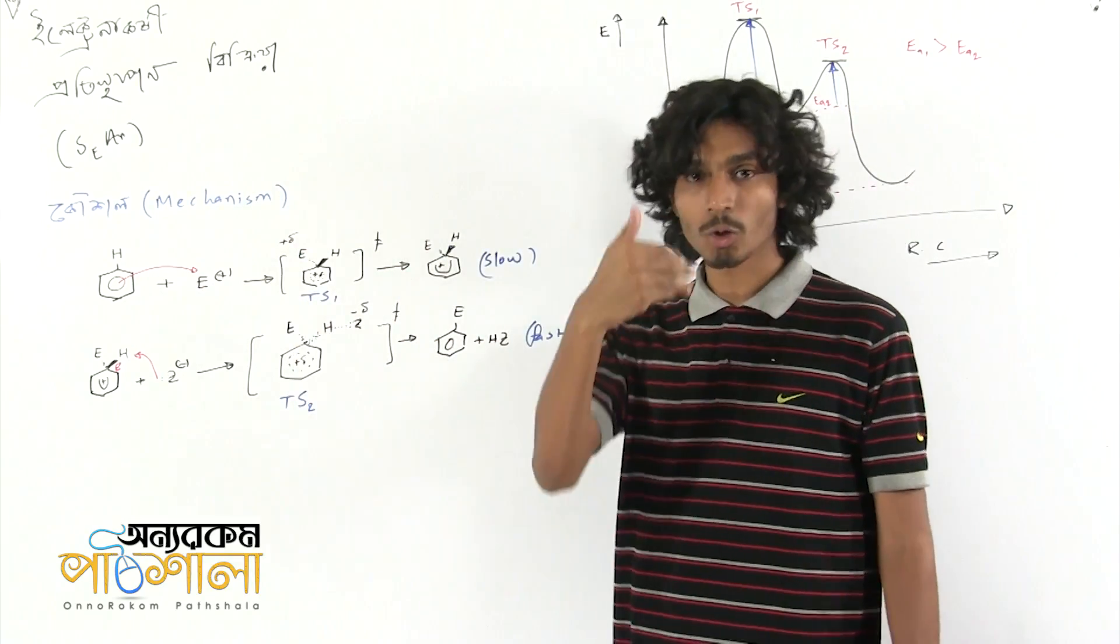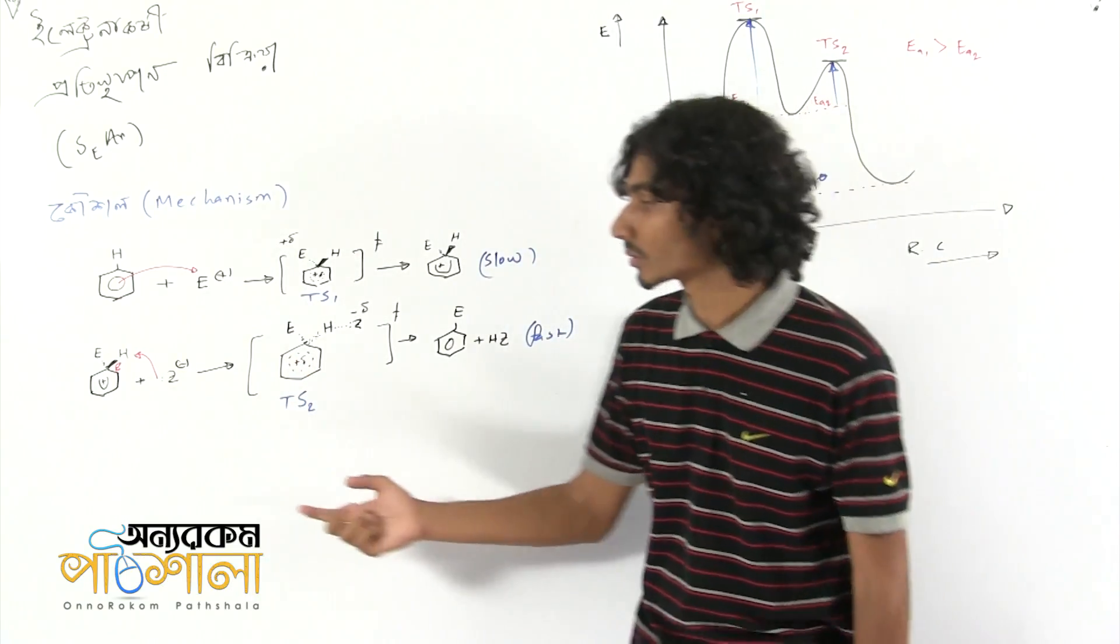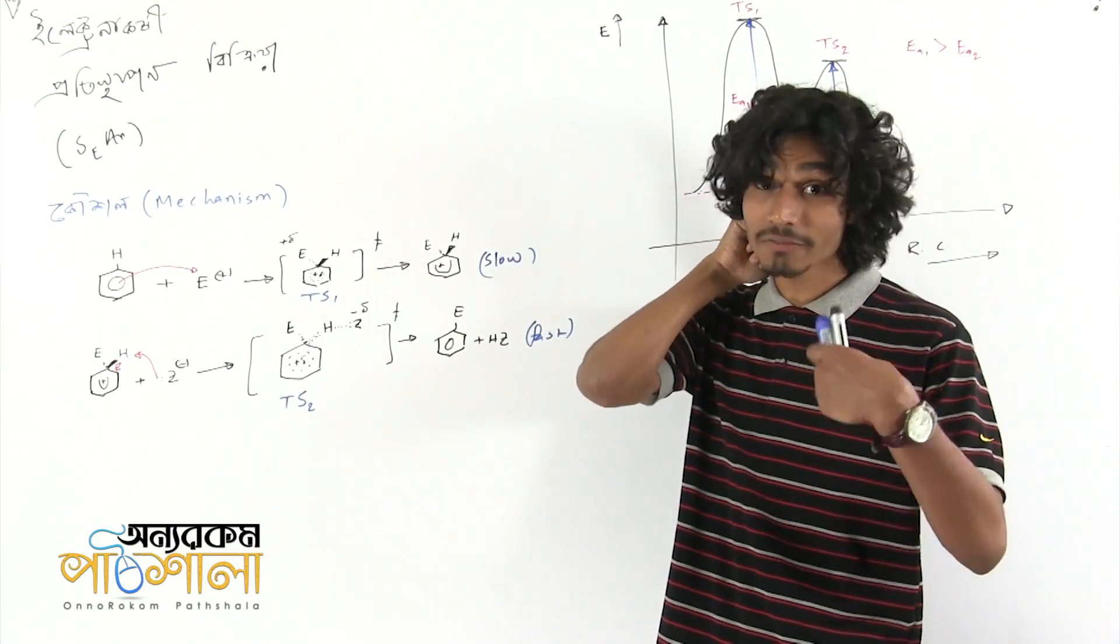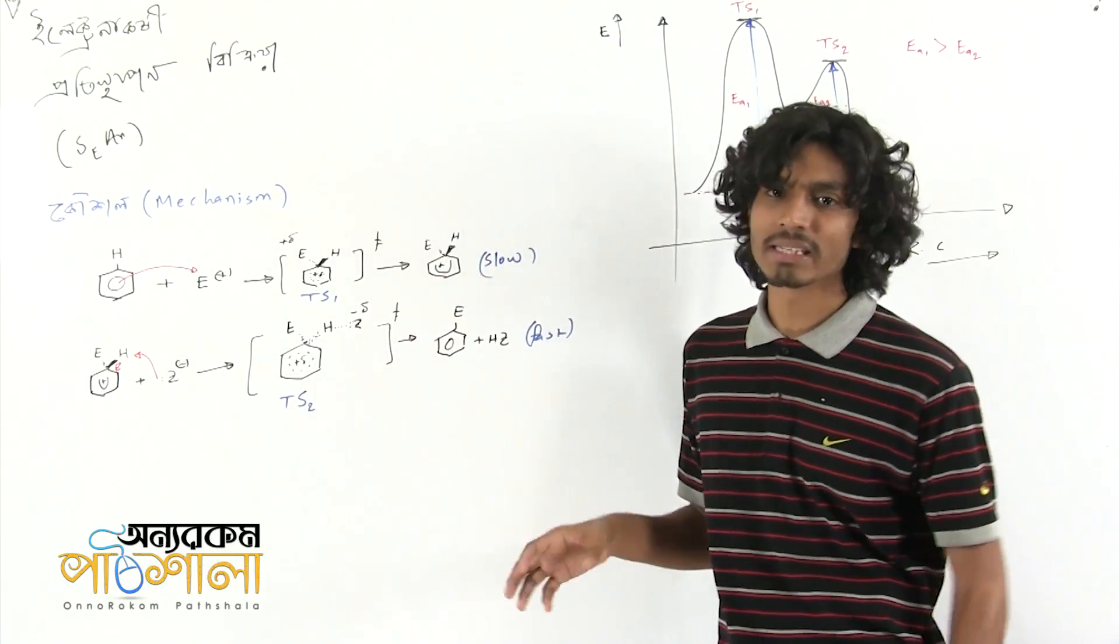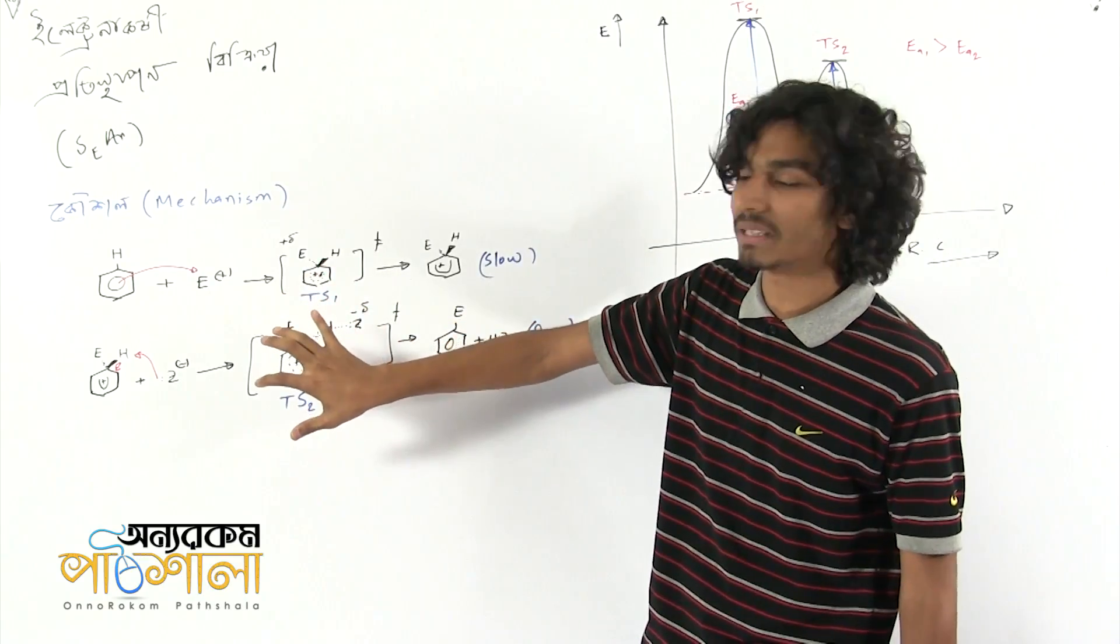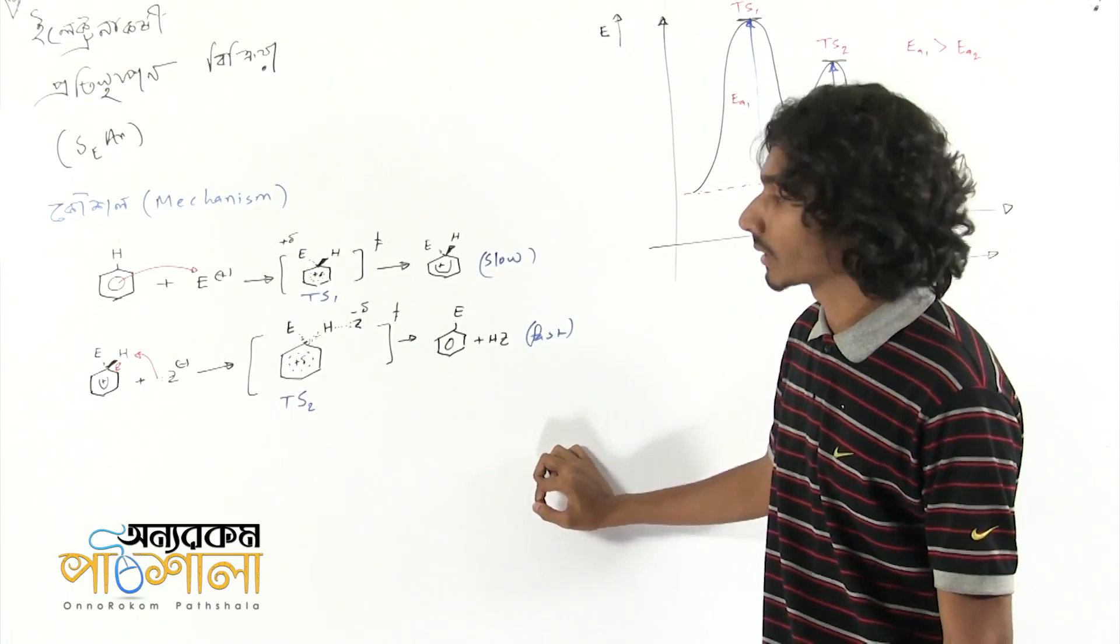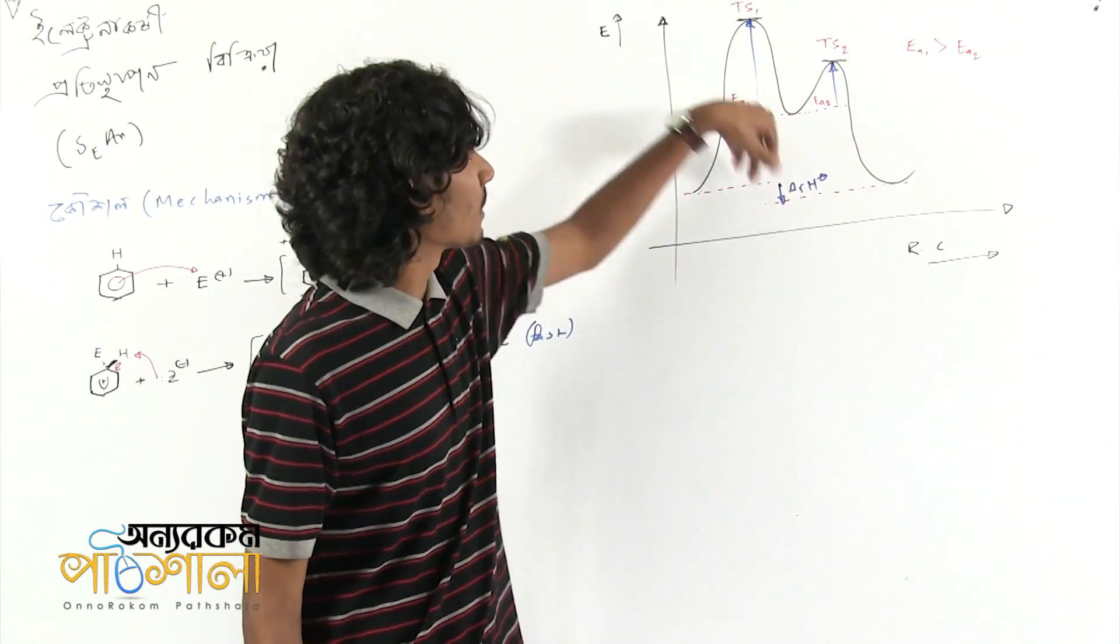The second step is simple - aromatic property is restored. The aromaticity is very stable, so that's why the second step is where we got aromaticity restored. Certainly this step can only proceed due to this. This is the transition state, where there is one piece to that. It will form an intermediate.